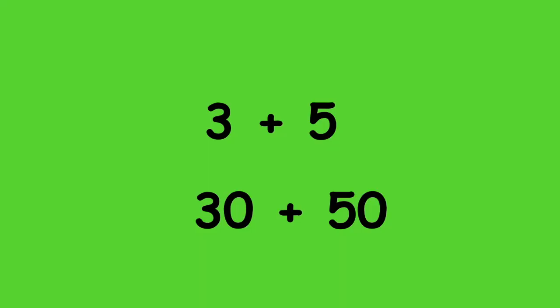In order for us to start thinking about how we can use what we know about adding ones to add in groups of 10, I'd like us to look at some addition sentences together and think about how they are alike. I have two addition sentences for you: 3 plus 5 and 30 plus 50. I want you to look at them closely. How are these number sentences alike?